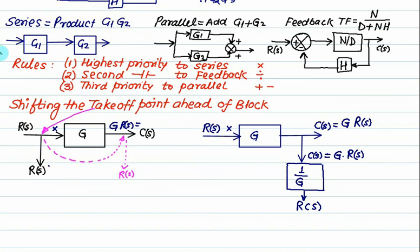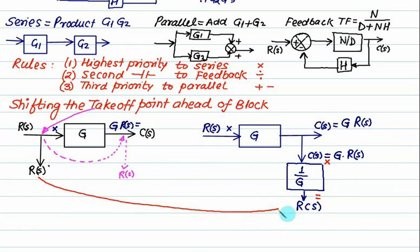So how do you read it? This value multiplied by this function is equal to this function. So this one is G into R of S, this one is 1/G. G into 1/G cancel out — you are left with R of S. So the original value and the final value are the same. So modification is permitted, and in the takeoff branch you have to add one extra transfer function. This transfer function is the reciprocal of the given transfer function, then modification is permitted.